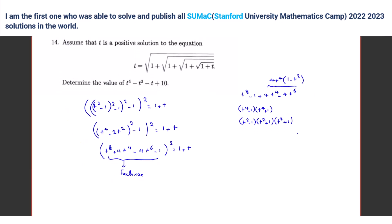I just wanted to show you that we can factor — understood? So we can say t squared minus 1. If you factor, it would be t squared plus 1 times t to the 4 plus 1, and here t squared minus 1 minus 4t to the 4. And whole to the power of 2 — all parts — equals 1 plus t.